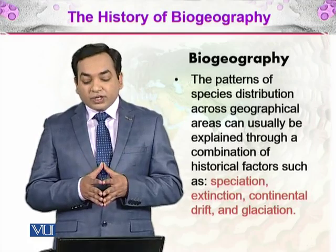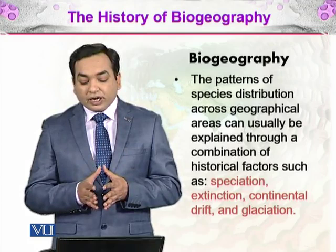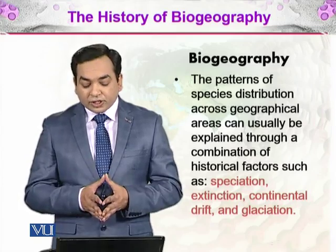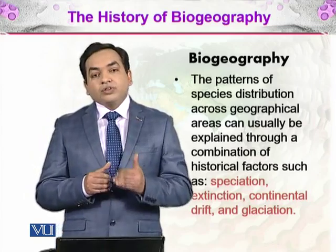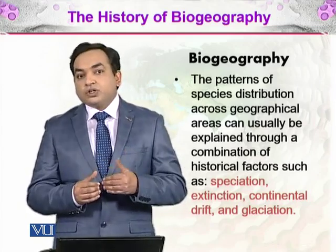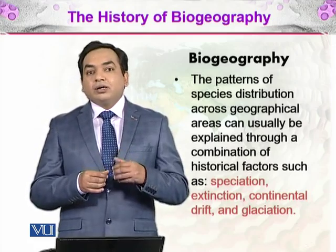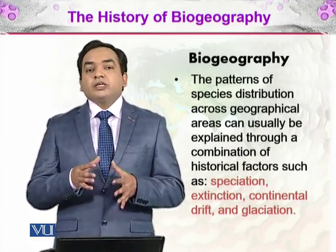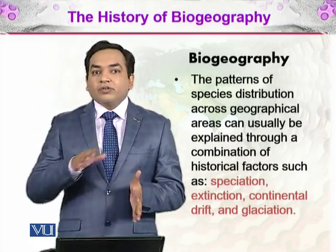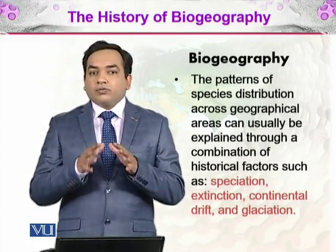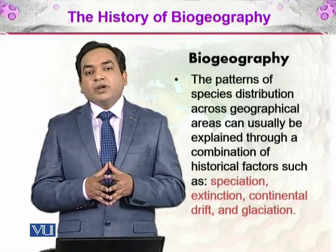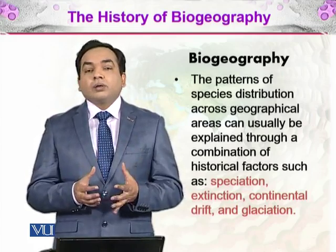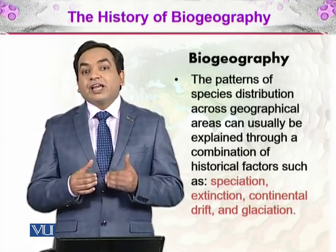The pattern of species distribution across geographical areas can usually be explained through a combination of historical factors such as speciation, extinction, continental drift, and glaciation. Speciation is the making of new species and extinction is the loss of species. Continental drift is part of geology, where continents drift on the surface of Earth — there was originally one large continent that split into different continents. Glaciation is a climatological factor involving the presence of large amounts of ice on Earth's surface due to lower temperatures.